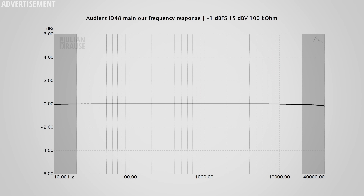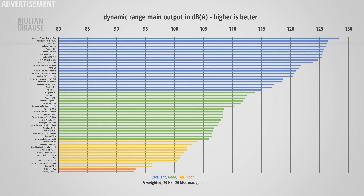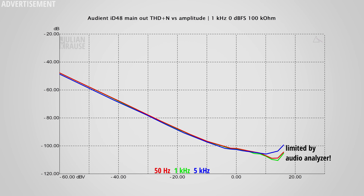On the output side, the monitor outputs show a ruler-flat frequency response, and dynamic range is excellent at 126.3 dBA — essentially guaranteeing no audible noise from the monitor outputs. Distortion components are so low that I had a hard time measuring them, as the interface outperformed my audio analyzer. The line outputs via the DB25 connector measure the same as the monitor outputs, so output quality is excellent across the board.